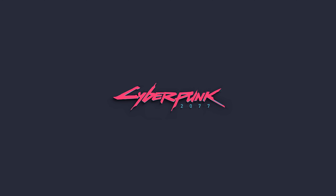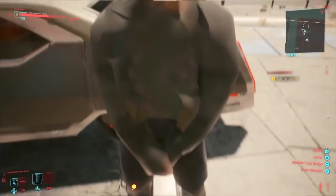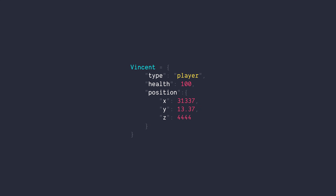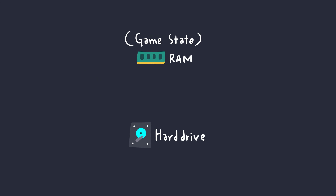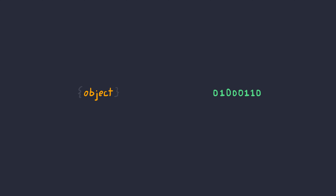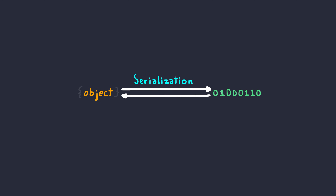Let's say you were playing Cyberpunk 2077, and your character in-game looks something like this. In memory, it looks something like this — merely just an object full of values. Those values are stored on your RAM, and once you close the game, it's gone forever. You want to be able to save the game and restore it back sometime later. The process of converting these objects into a stream of bytes that can be stored is called serialization. And the reverse process of converting that stream of bytes from a file or a network back to an object is called deserialization.